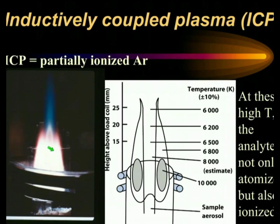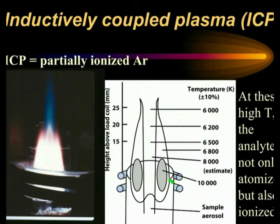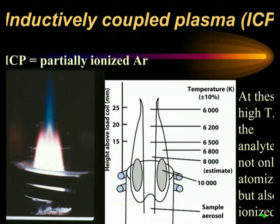You can see the sequential processes taking place. The temperatures in the plasma, depending on where you look, are up to 10,000 Kelvin. At these high temperatures, not only is what you put in completely atomized, but it's also ionized.